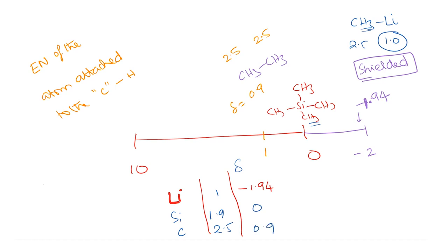As electronegativity increases, the chemical shift delta value goes up. We can understand this purely by invoking the concept of shielding and deshielding — the more shielded the group is, the lower the chemical shift. The electronegativity of the attached group is very important in determining the chemical shift.